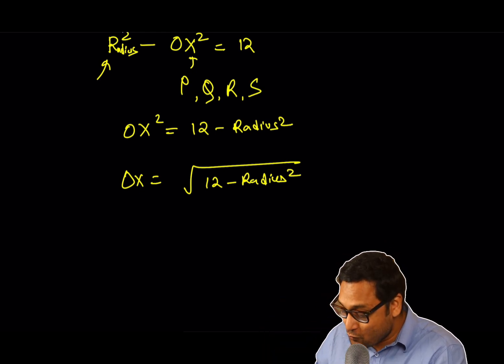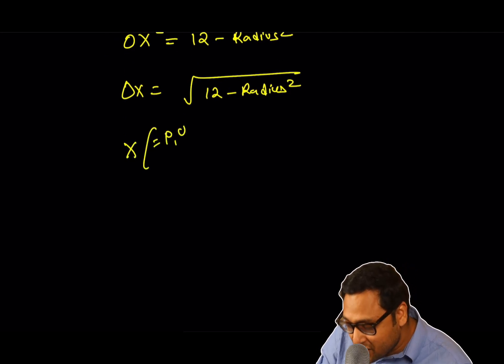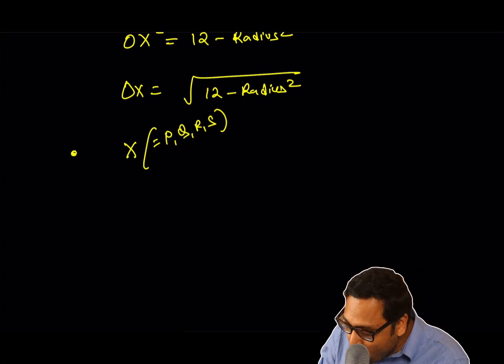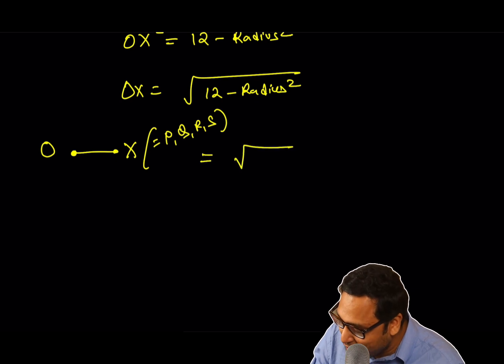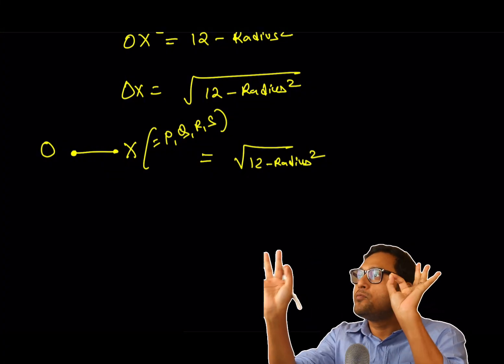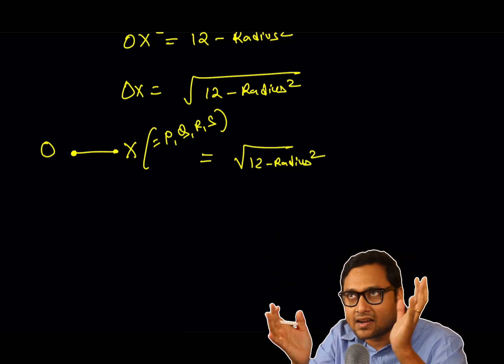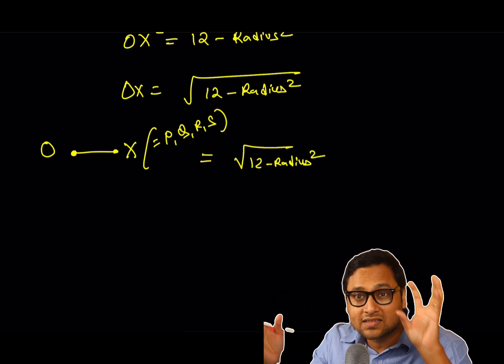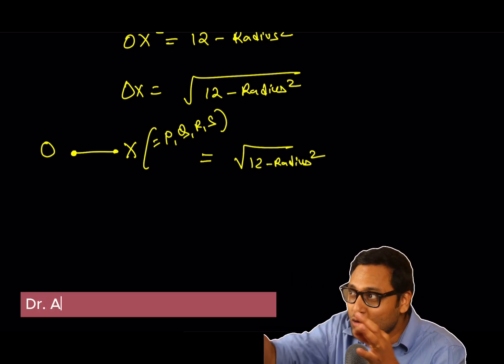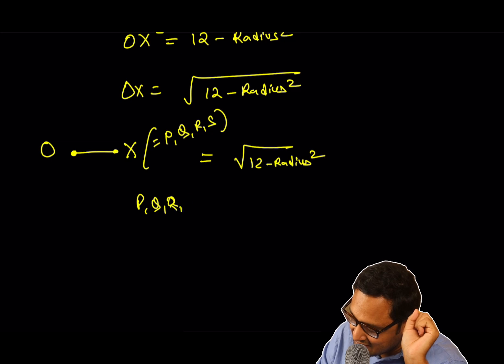And we are done. Because what this equation says is that X, which we know is either P or Q or R or S, we know that X to O, this distance, is square root of 12 minus radius square, a fixed number. So the distance from O to P, Q, R, S, the distance is always square root of radius square of the main circle's radius square minus 12. So it's a fixed number. O to each of those points is a fixed number. That is the definition of a circle. That all the points should be equidistant from a single point. So what we just proved that P, Q, R, S is cyclic.